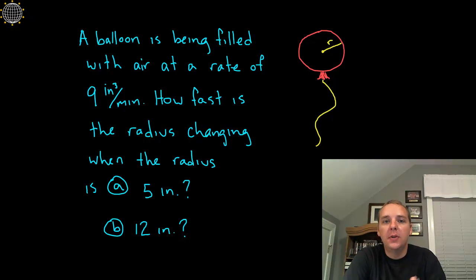In this example we have a balloon that's being filled with air at a rate of 9 cubic inches every minute. Now that's going to make the radius get larger, the radius is going to increase because we're pumping air into it.